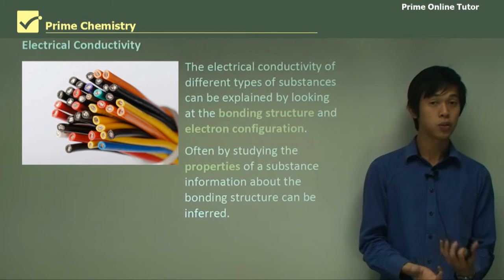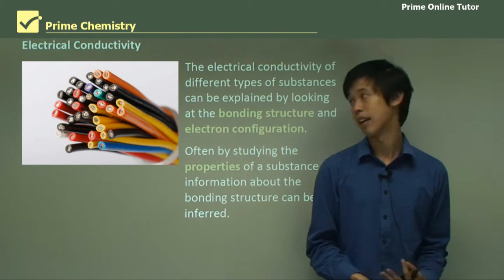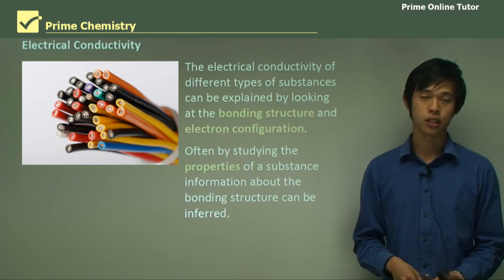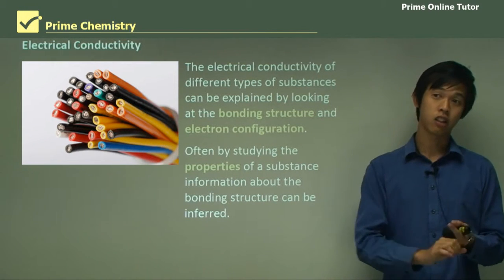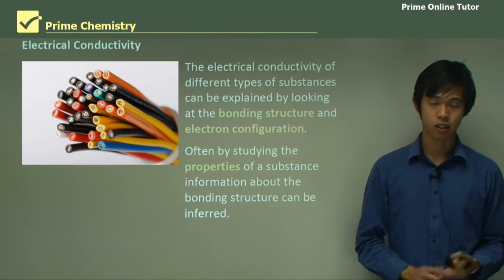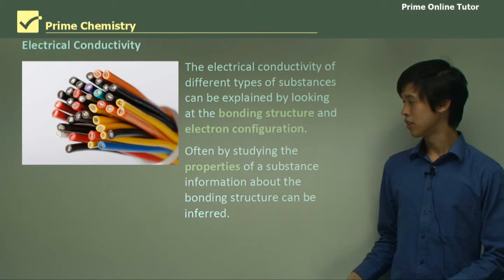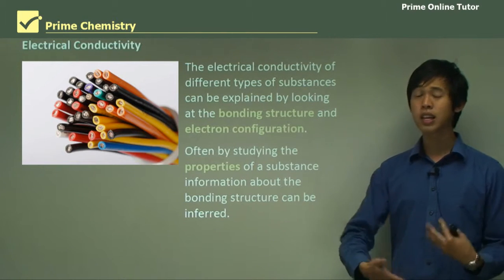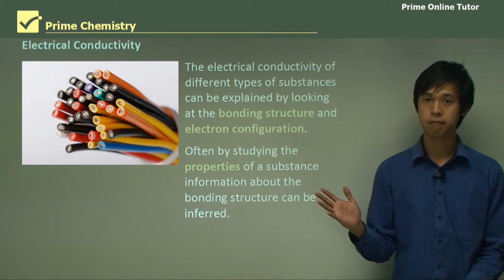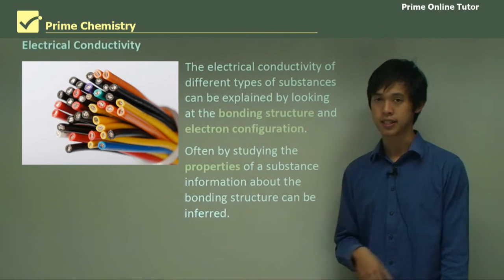For instance, if I knew a substance conducted electricity very well, I would likely think that it would be a metal. Or if it didn't conduct electricity well, it could be any of the other three. And if it could conduct in solution, then maybe it would be an ionic substance. So you can see that by looking at the properties, we can actually infer something about the way it's bonded.